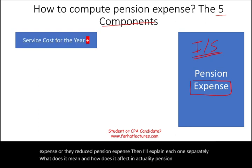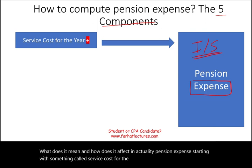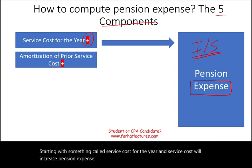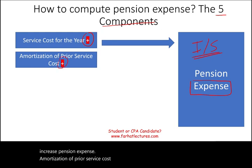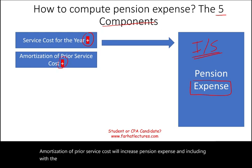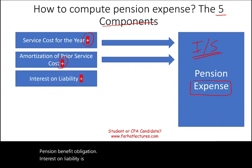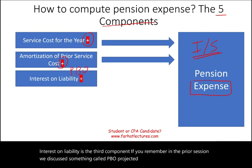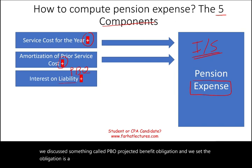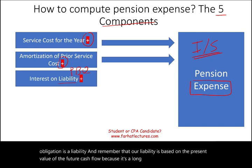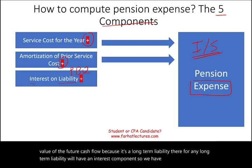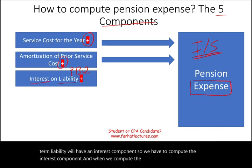Starting with service cost for the year — service cost will increase pension expense. Amortization of prior service cost will also increase pension expense, including any plan amendment, which means plan changes. Interest on liability is the third component. If you remember from the prior session, we discussed PBO — projected benefit obligation — and the obligation is a liability based on the present value of future cash flows because it's a long-term liability. Therefore, any long-term liability will have an interest component, and when we compute it, it increases our pension expense.